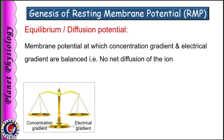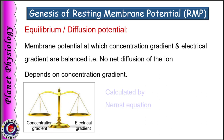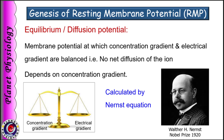The value of diffusion potential can be exactly calculated if the concentration gradient for that particular ion is known. Walther Nernst derived the equation to calculate this equilibrium potential for a specific ion, and for this work he was awarded the Nobel Prize in 1920.